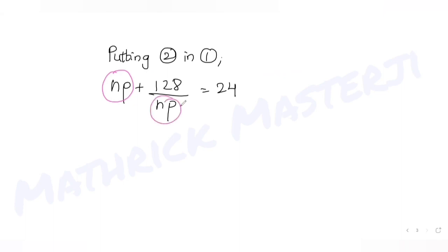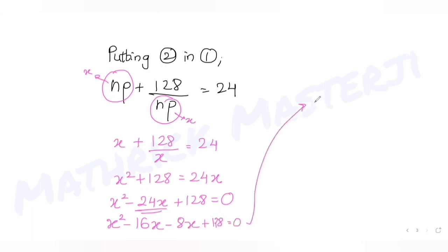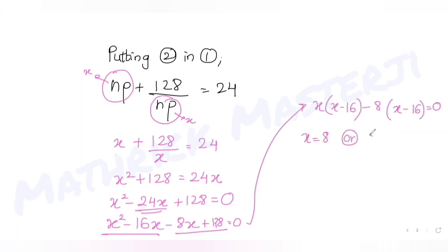Let x = np. Then x + 128/x = 24, so x² + 128 = 24x, giving x² − 24x + 128 = 0. Splitting the middle term: we need factors with product 128 and sum −24, which gives −16 and −8. Factoring: x(x−16) − 8(x−16) = 0, so (x−8)(x−16) = 0.